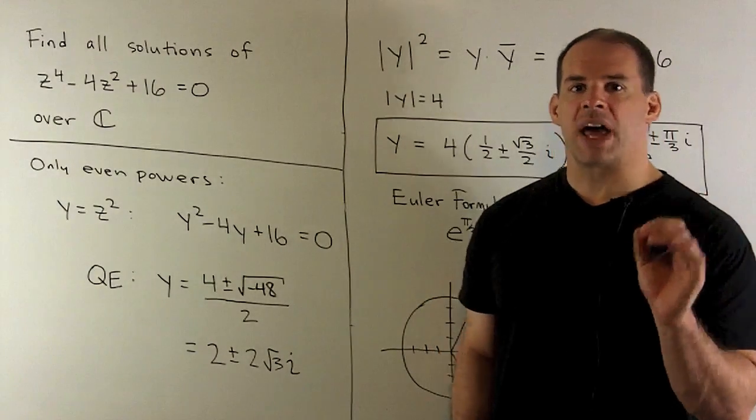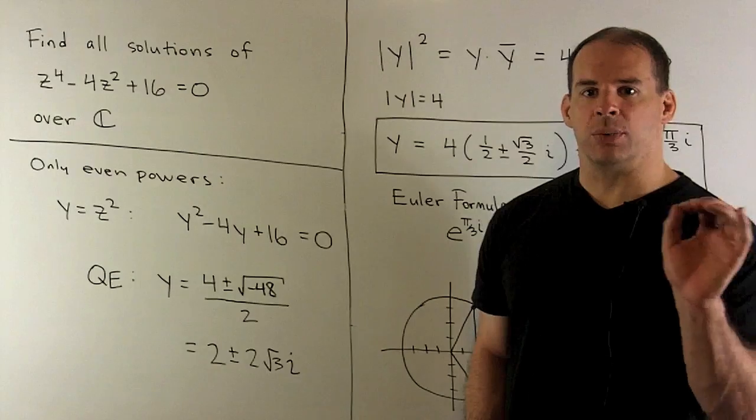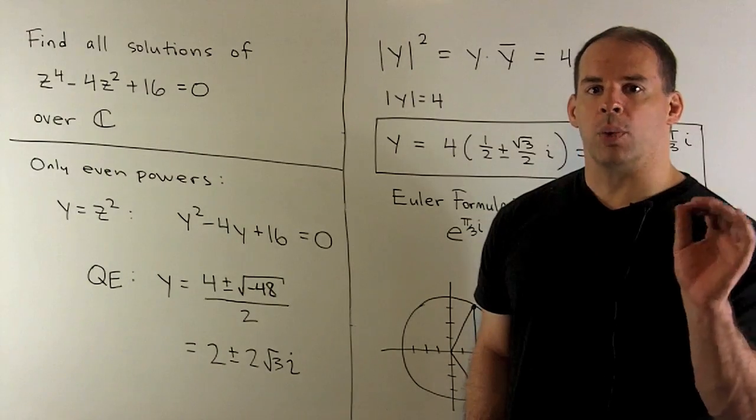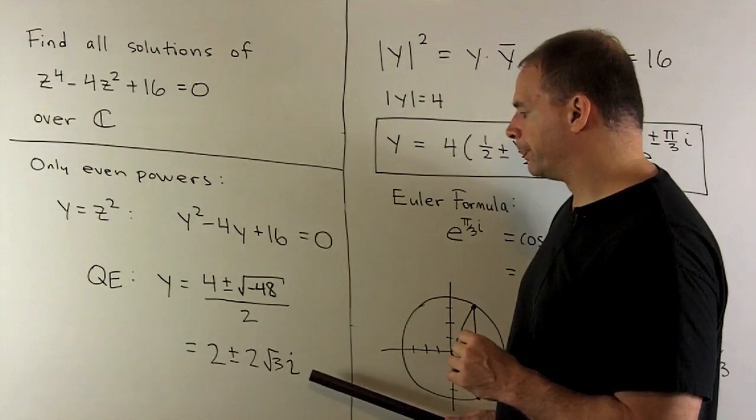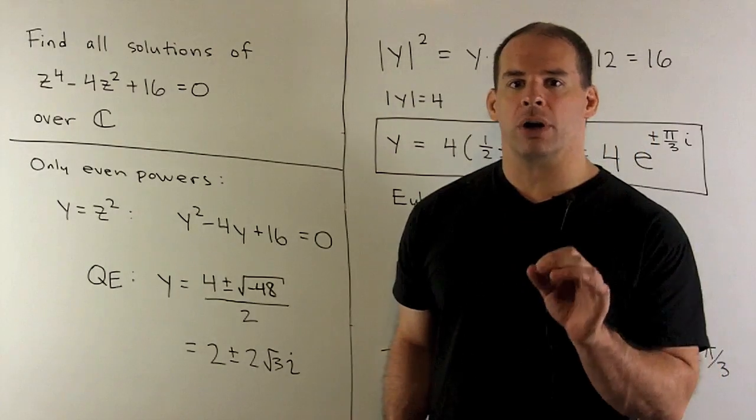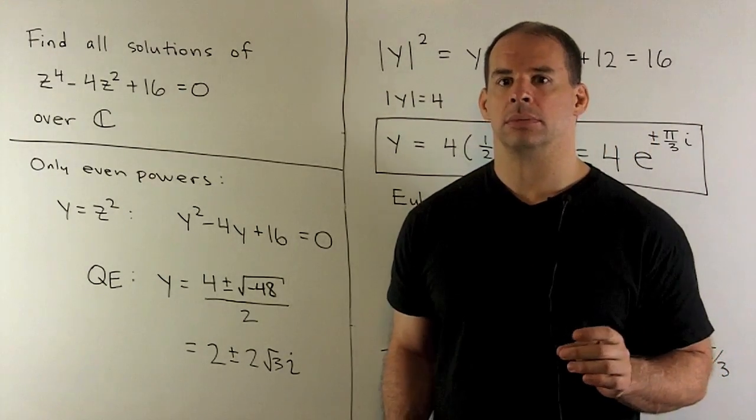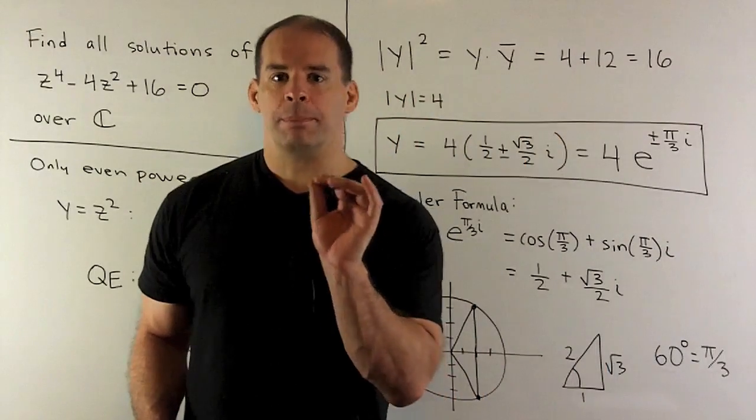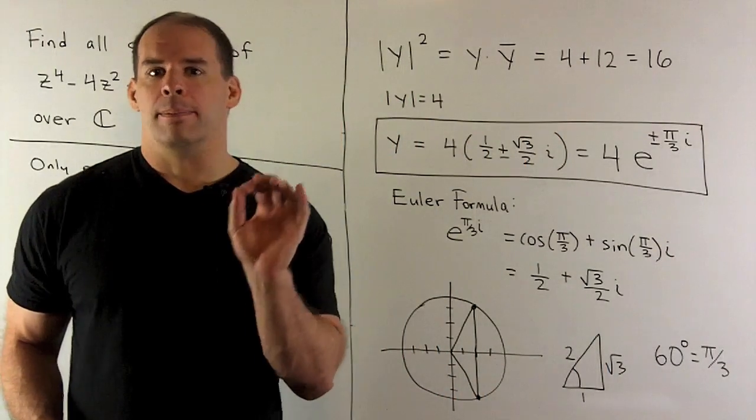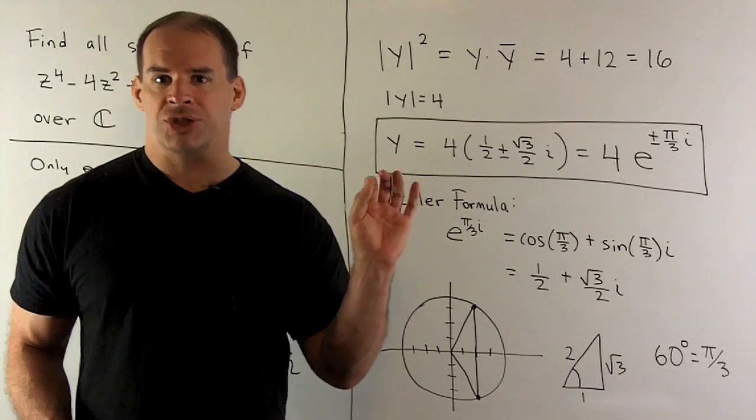Now, we want to solve for z. We have that y is equal to z squared, so we want to take the square root of a complex number. To do that, we're going to want to convert from rectangular form to polar form. To get polar form, we'll need the modulus and an angle for each solution.